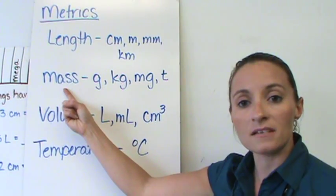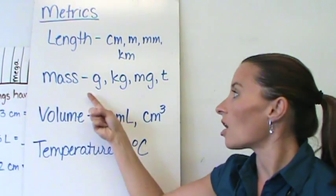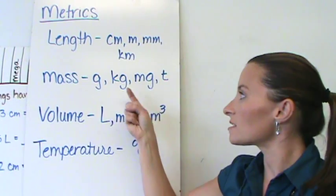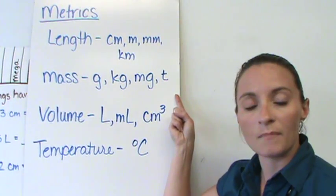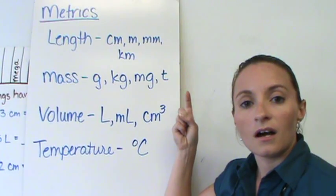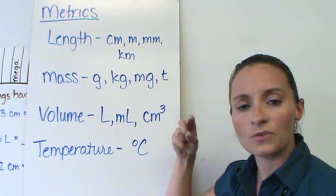The major mass units are grams, kilograms, milligrams, and the metric ton, which is 2,000 kilograms.